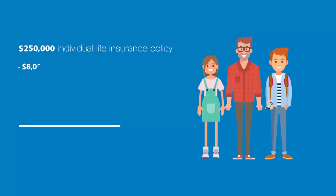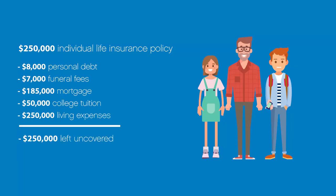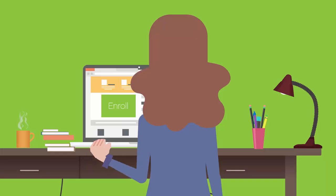Gwen wants to be sure that if something were to happen to her, the family could afford to pay off any immediate expenses, as well as the mortgage, her son's college tuition, and general living expenses for at least the next five years.